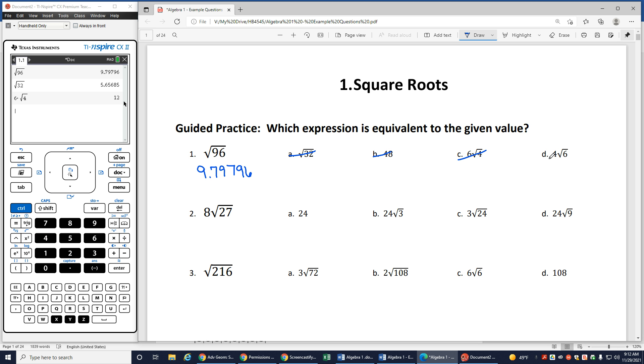So it better be d, 4 square roots of 6, let's see. And yes, yes it is, that is going to be the same answer that I had there, so d is going to be my correct answer.